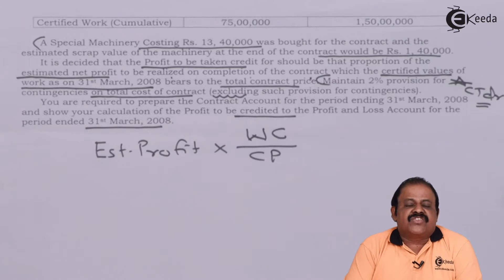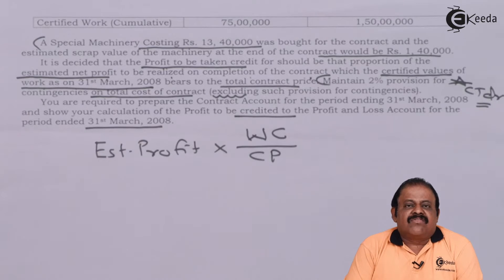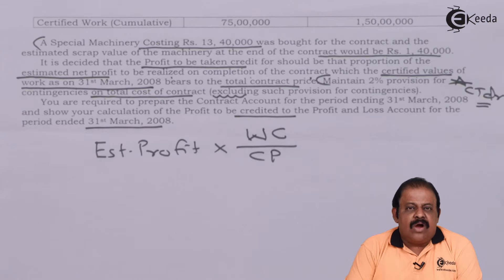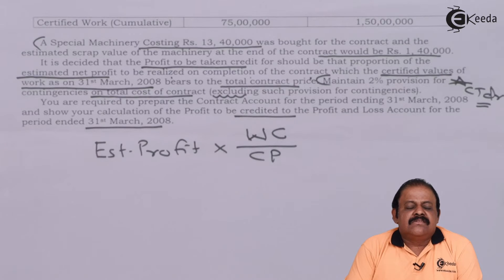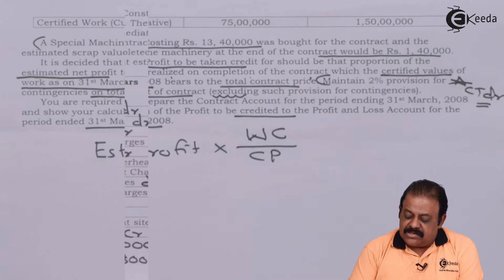This is the information we have. We are required to prepare two accounts: one contract account for the period of 11 months, and then a total contract account for a period of 20 months.